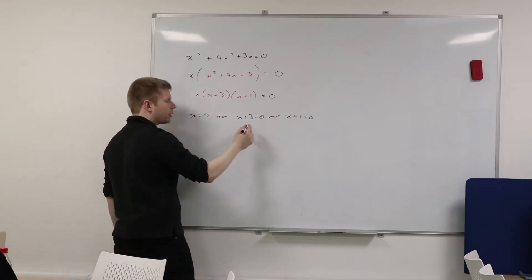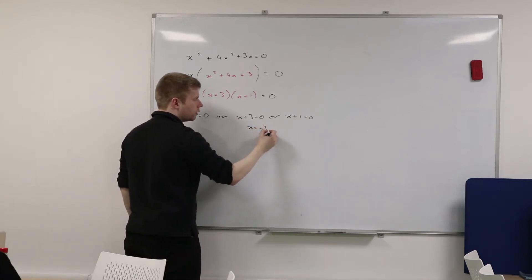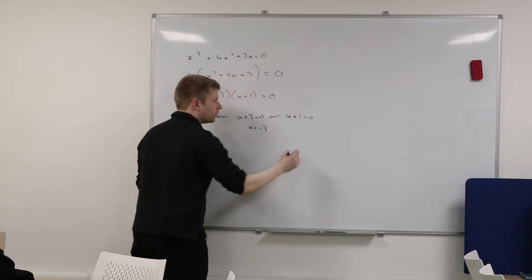If x plus three equals zero, then what does x have to be equal to? Negative three. And if x plus one equals zero, what does x have to be equal to? Negative one.